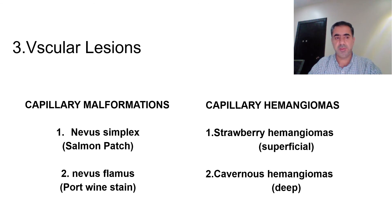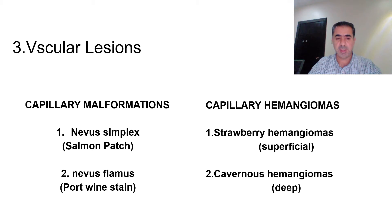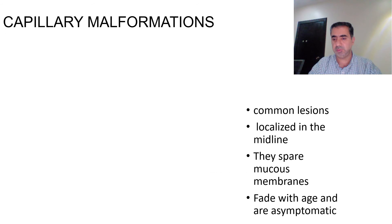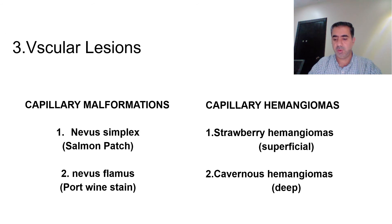The third category is vascular or capillary lesions, divided into two parts: capillary malformations and capillary hemangiomas. Capillary malformations have two types: nevus simplex (salmon patch) and nevus flammeus (port wine stain). Capillary hemangiomas have two types: superficial (strawberry hemangioma) or deep (cavernous hemangioma).